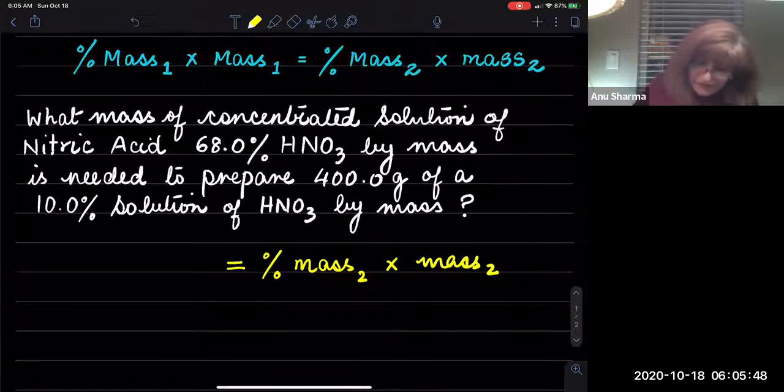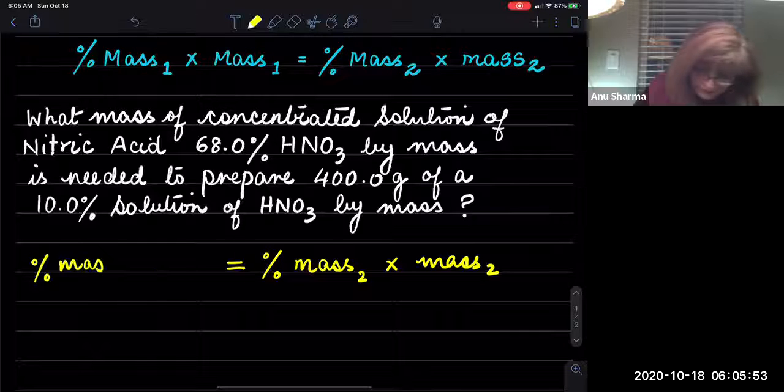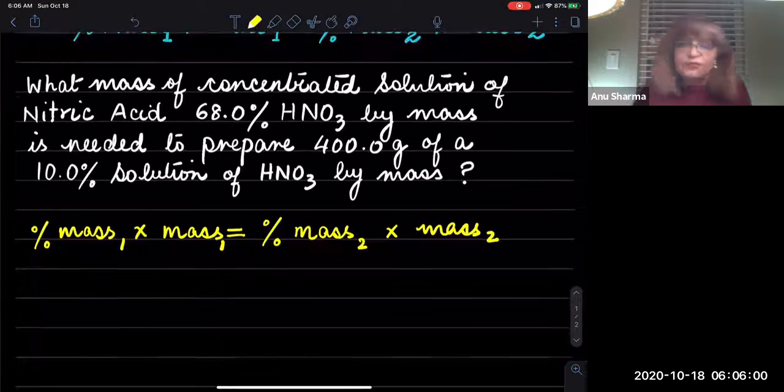And here is what you need to find: the mass percent is given to you, the mass percentage of one times the mass of one. So this is what we need to find, the mass of one.